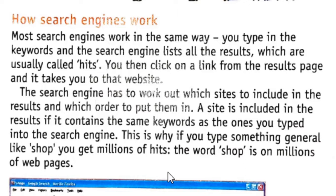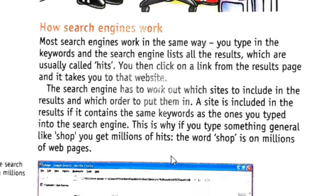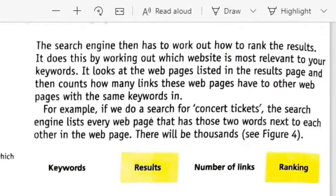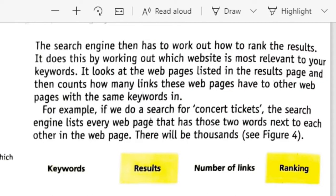A site is included in the results if it contains the same keywords as the ones you typed into the search engine. This is why if you type something general like 'shop', you get millions of hits — the word 'shop' is on millions of pages. The search engine then has to work out how to rank the results, meaning which one should go first, which one second, and so on. It does this by working out which website is most relevant to your keywords, looking at how many links those webpages have to other webpages with the same keywords.